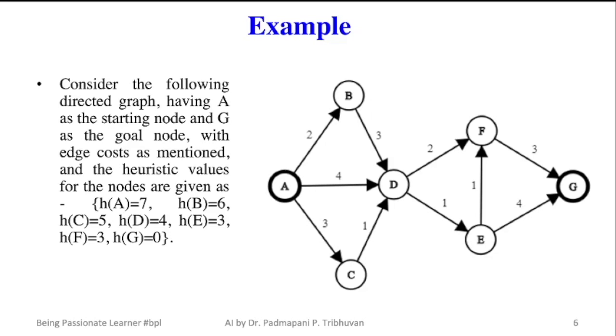Edge costs are also mentioned in the graph. Consider heuristic values are calculated using some heuristic function. Heuristic of node B is 6, heuristic of C is 5, heuristic of D node is 4,